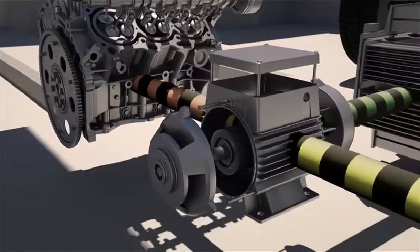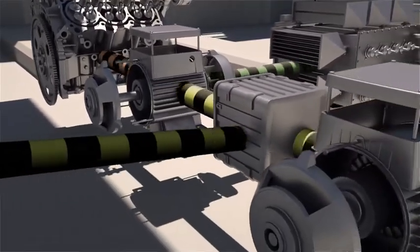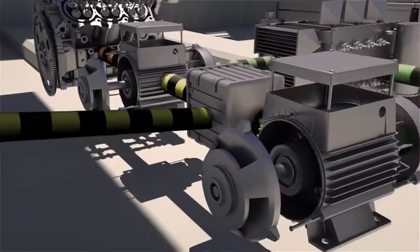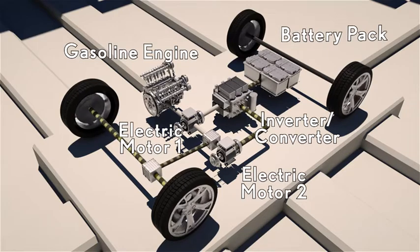The remarkable Lexus Hybrid Drive system employs not one but two electric motors. The engine's power is not needed when the vehicle is driving slowly, decelerating or stopped, yet automatically shuts down to enhance fuel economy.